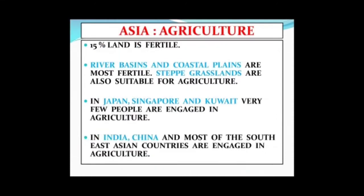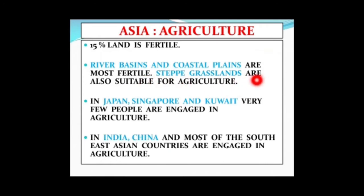Land is also a resource and we can do agriculture on the land — when we grow crops it is very valuable. About 15 percent of land is fertile in Asia. Fertile land is mostly in river valleys or river basins and in the coastal plains, where sediments are brought and make the land fertile. Even the steppe grasslands of Asia are suitable for agriculture.